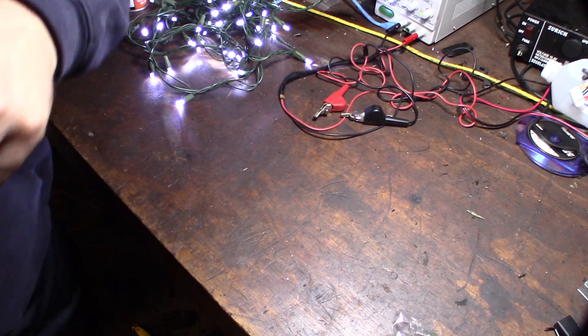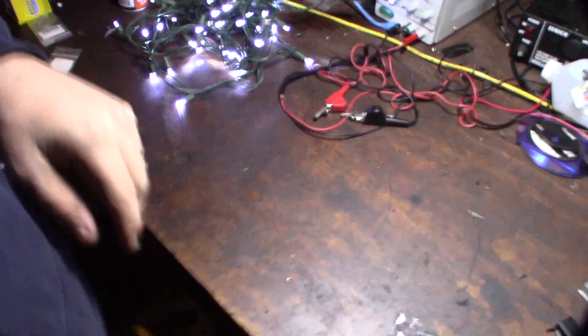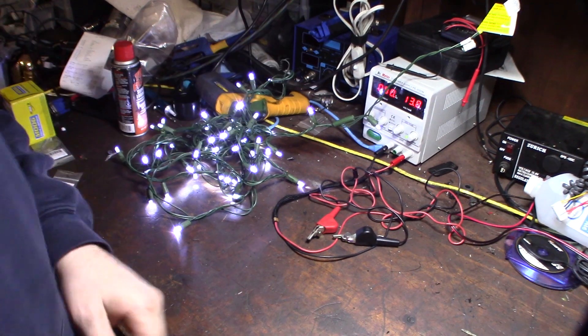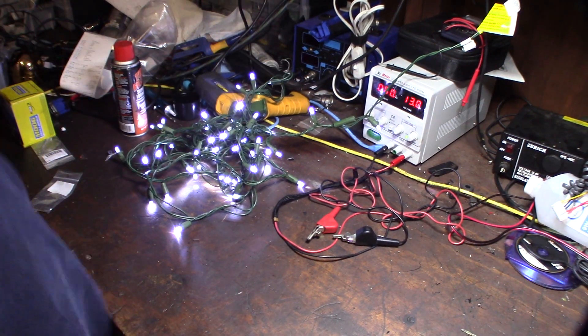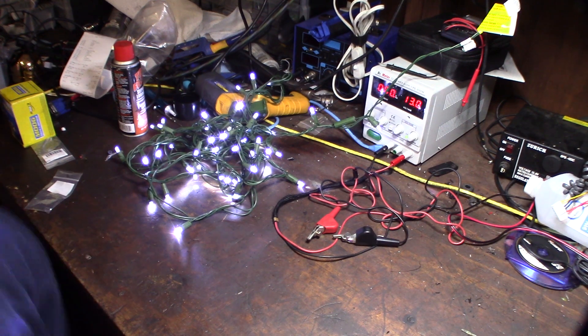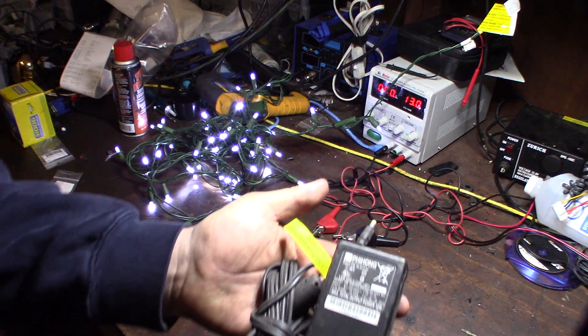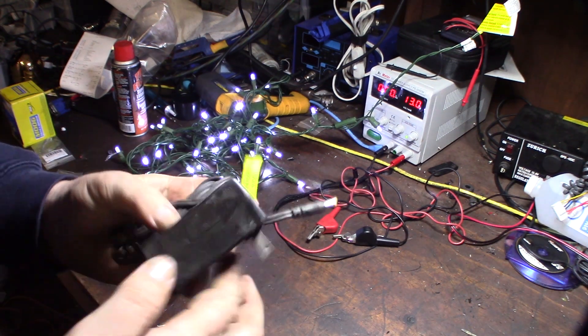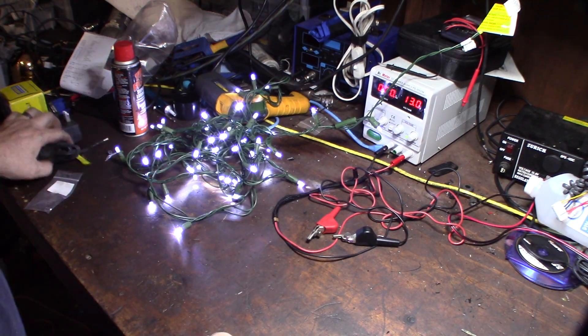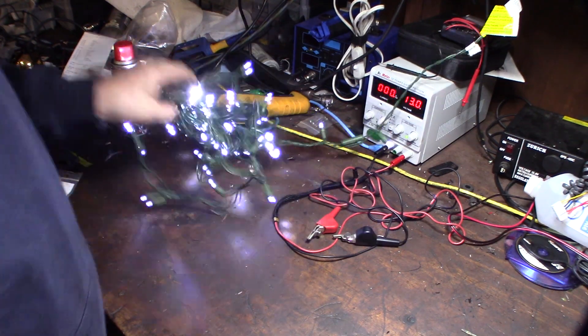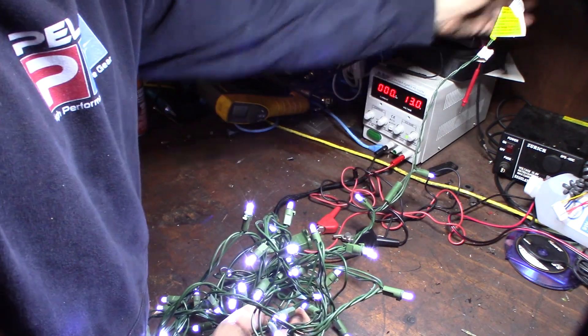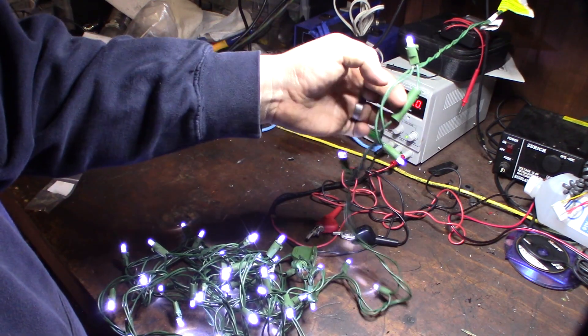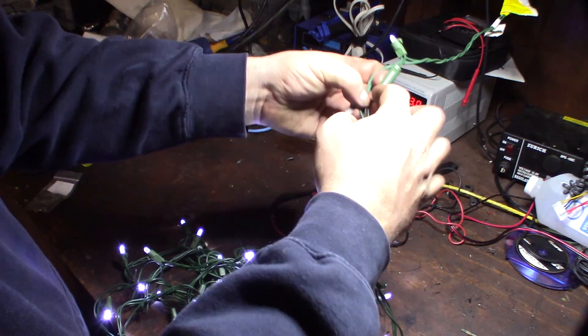You can also do this with a multimeter too, just by checking resistance and stuff. All I used was a power supply, but like I said, any little power supply like this - you can grab one, cut off the end, and as long as it has 12 volts on it, you can do the exact same thing. But you have to test it after the rectifier, because this is the thing that converts it from AC to DC. So you have to test it after the rectifier.